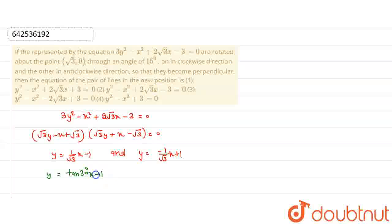So this becomes y = tan(30°)(x - 1) and y = tan(150°)x + 1. Now rotate 15 degrees with respect to point (√3, 0).